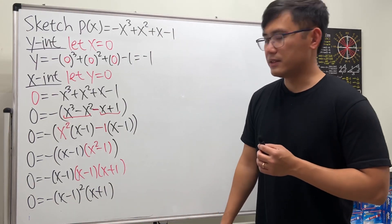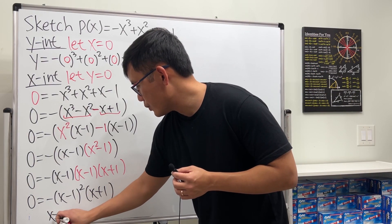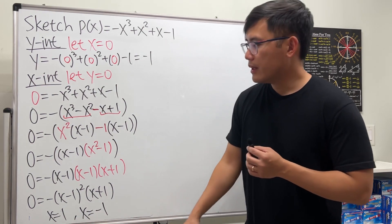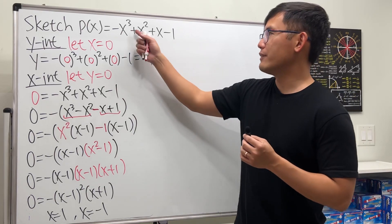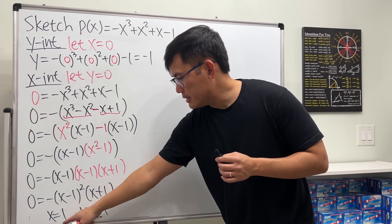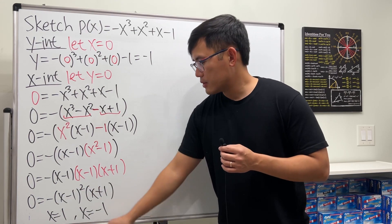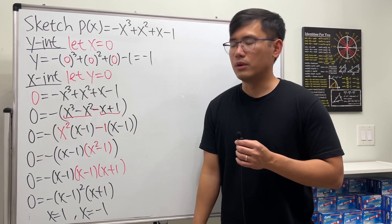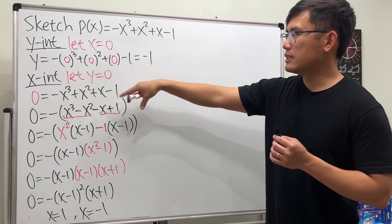From the factored form we can find the zeros. Setting the first factor equal to zero gives x = 1, and setting the second factor equal to zero gives x = -1. So we have two x-intercepts. This might seem strange for a cubic, but the multiplicity of x = 1 is two, so it counts twice. Altogether we technically have one, one, and negative one.